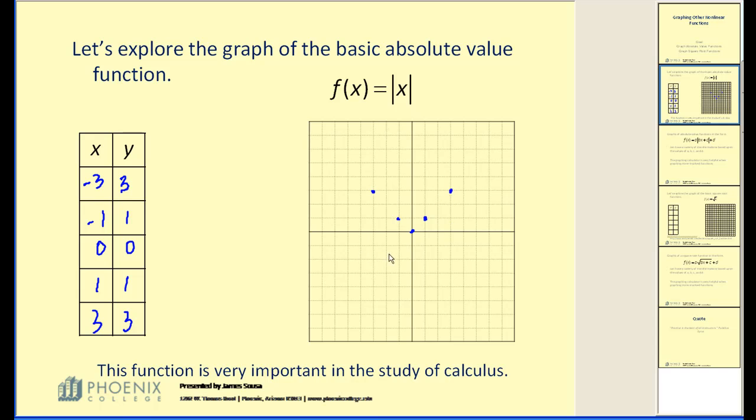And as you can see, this graph has a V shape to it. Absolute value function graphs are always going to be in the shape of a V. They may be wider or narrower, they may be shifted up or down, but they'll always be in the shape of a V.